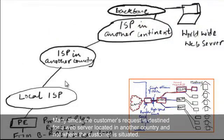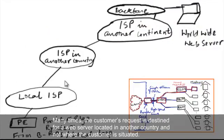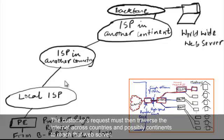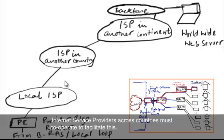Many times the customer's request is destined for a web server that is located in another country and not where the customer is situated. The customer's request must then traverse the internet across countries and possibly continents to reach that web server. Internet service providers across countries must cooperate to facilitate this.